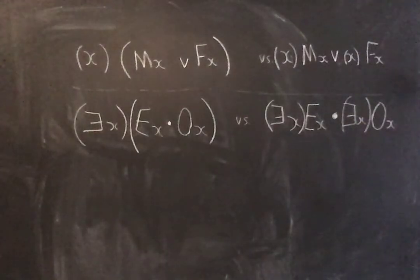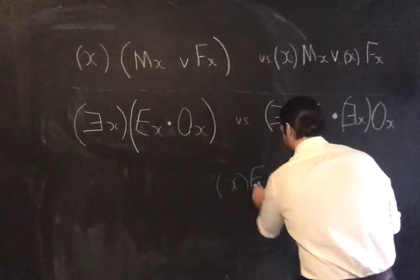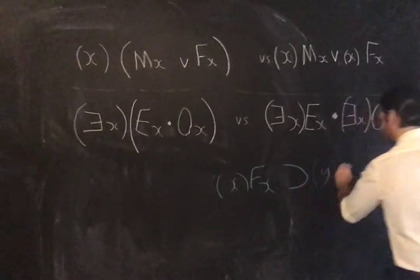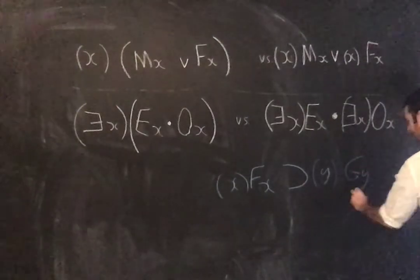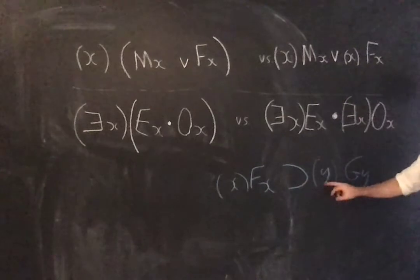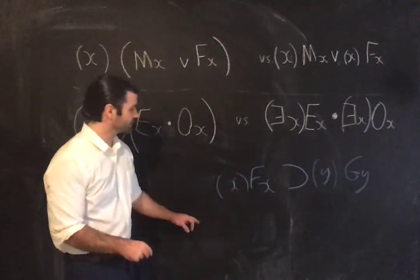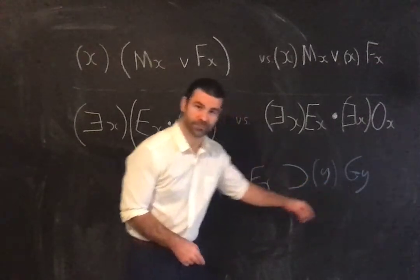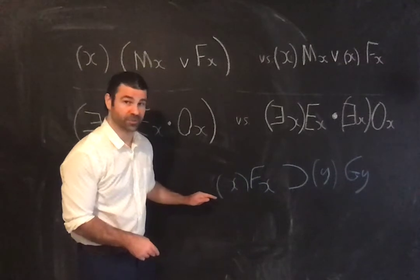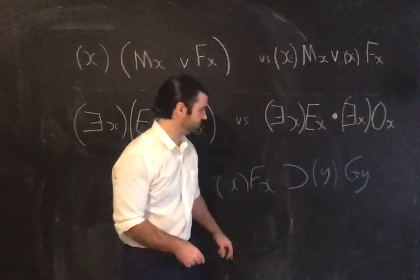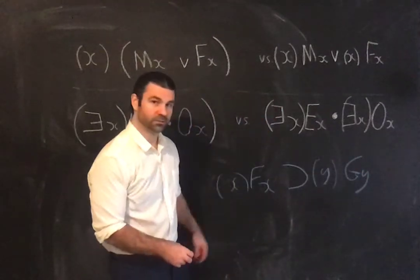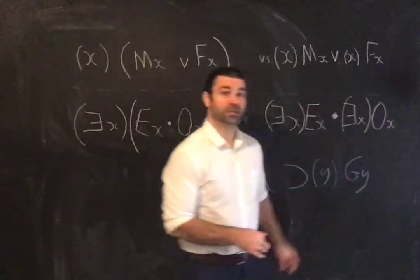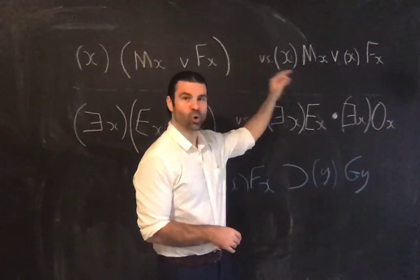For example, if the major operator were a conditional, you would start with 'if.' Take a formula like 'for all x, fx, hook, for all y, gy' — the major operator is a hook (conditional), so you say: 'if everything is F, then everything is G.' Note that this says exactly the same thing whether you use x or y for the second quantifier, since each quantifier binds only its own variable. So for the disjunction, the first word is 'either': either everything is male, or everything is female.